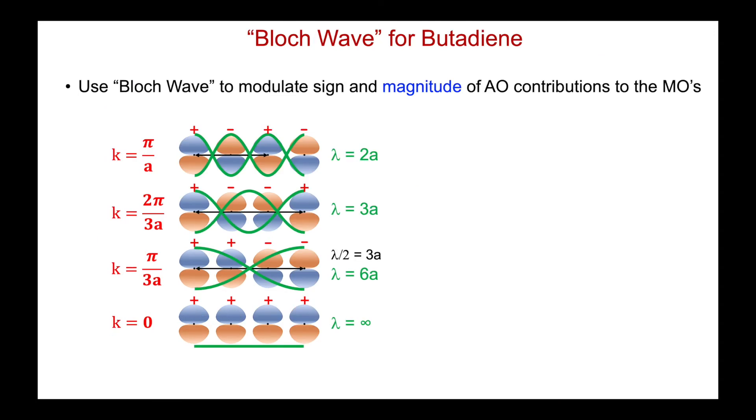We could go a little bit further. We talked briefly about a Bloch wave previously for our 1D solids. Well, we know this modulates the signs of the AOs, but we can also look at it in terms of modulating the amplitude of the atomic orbital contributions to the MOs. And so let's just look at that amplitude damping that results from the Bloch wave.